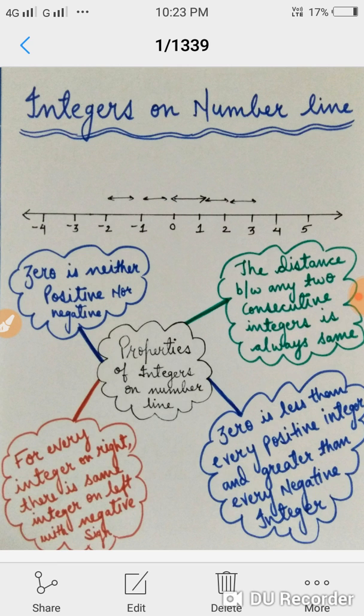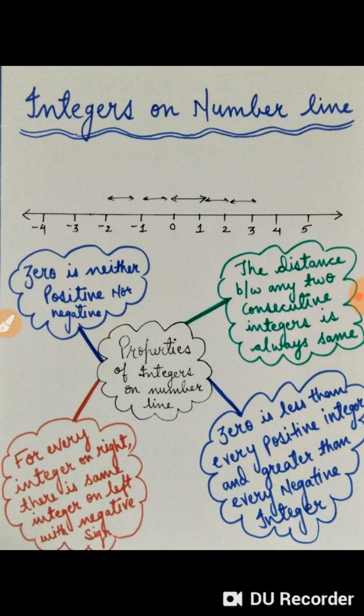Next is 0 is less than every positive integer and greater than every negative integer. Or in short, we can say that all the integers on right are greater than all the integers on left, which can be said in this way also that the integers on number line are arranged in ascending order.